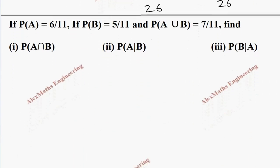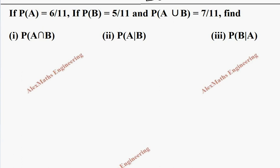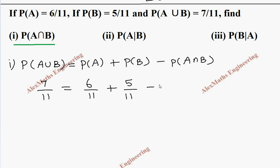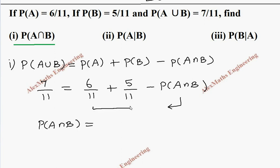Coming to the next one, they have given P of A, P of B, and P of A union B. In the first subdivision, they want P of A intersection B. Writing the formula for P of A union B: P of A union B equals P of A plus P of B minus P of A intersection B. Substituting: P of A union B is 7 by 11, P of A is 6 by 11, P of B is 5 by 11. Moving P of A intersection B to the other side and simplifying 6 by 11 plus 5 by 11 equals 11 by 11, then subtracting 7 by 11 gives P of A intersection B equals 4 by 11.